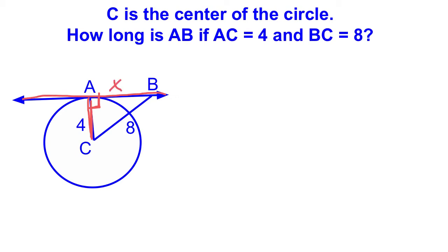I'm going to label AB as x. I'll set up my Pythagorean theorem problem by doing 4 squared plus x squared equals 8 squared.